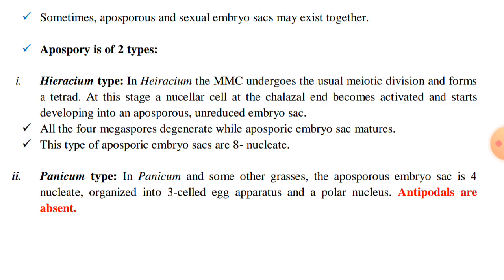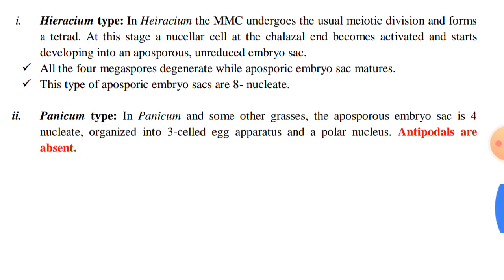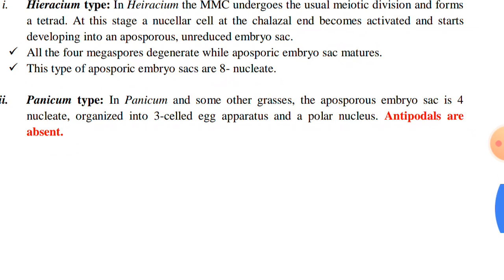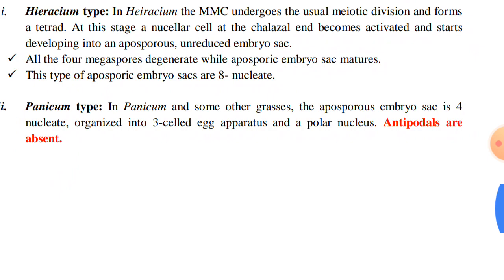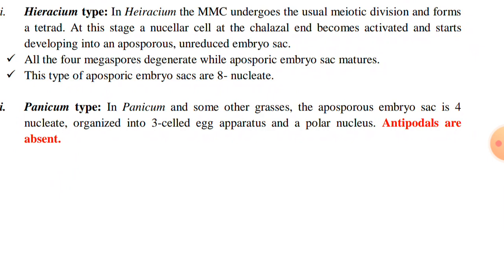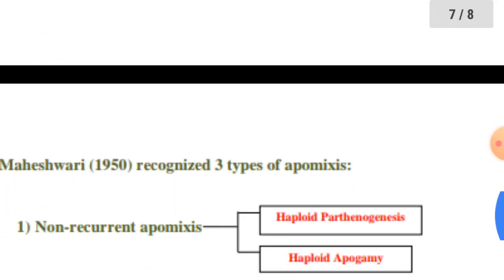The second category of apospory is the Panicum type. In Panicum and some other grasses, the aposporous embryo sac is 4-nucleate, organized into a three-celled egg apparatus and a polar nucleus. Antipodals are absent.